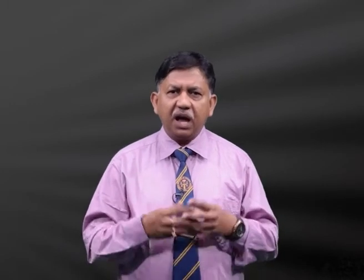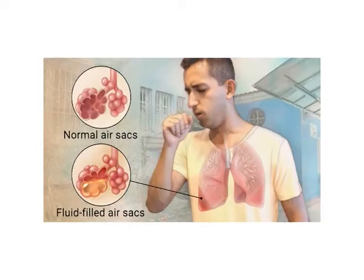The third type is secondary drowning, also called post-immersion syndrome. Death occurs due to secondary effects of drowning, usually seen after a gap of a few hours or days in a resuscitated patient. Death may be due to anoxia, irreversible brain damage associated with electrolyte imbalance or metabolic acidosis, associated head trauma, or bronchopneumonia.